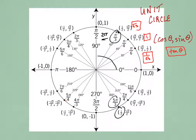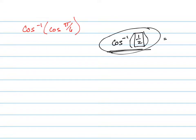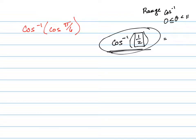For the cosine inverse, the range is limited to between 0 and π. So the range of your cosine inverse function is θ has to be between 0 inclusive and π inclusive — including π as well, because the cosine at π would be negative 1. So it's between 0 and π.